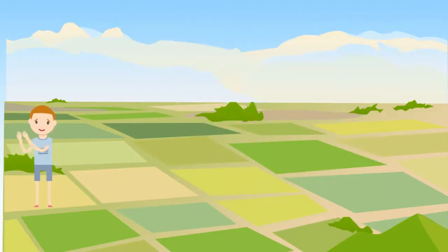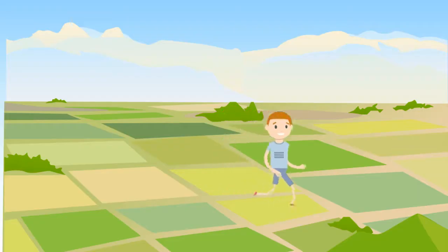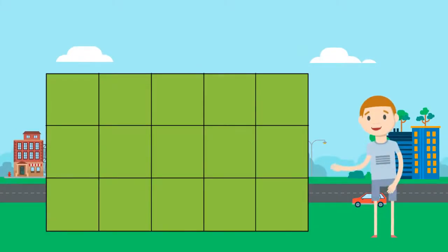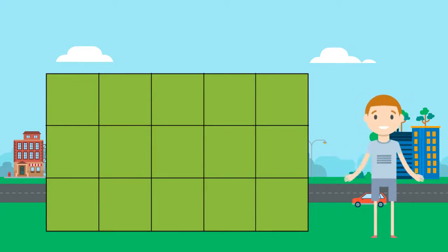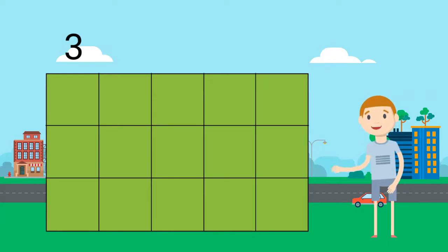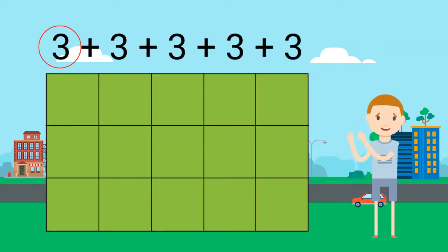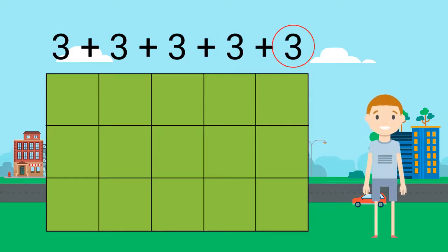Let's practice some more. Follow me! Look at this rectangle. Let's divide this rectangle into rows and columns. My rectangle is now filled with squares. Each column has 3 squares. There are 5 different columns. This is 3 plus 3 plus 3 plus 3 plus 3.